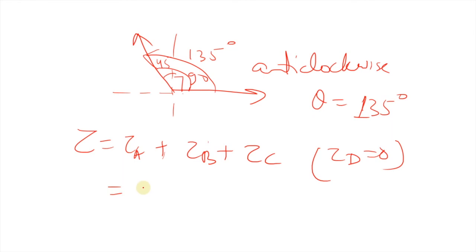So 30 into 0.1 into sin minus 90 plus torque of B will be equal to 20 into 0.05 into sin of 90, and for C it's 30 into 0.05 into sin of 135.